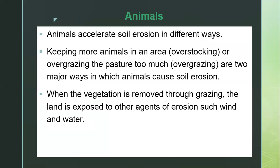When vegetation is removed through grazing, the land is exposed to other agents of erosion such as wind and water. After grazing, the vegetation within a place is removed, leaving the land bare and exposed. This allows wind to carry the soil away, and water can also carry the soil, leading to soil erosion.